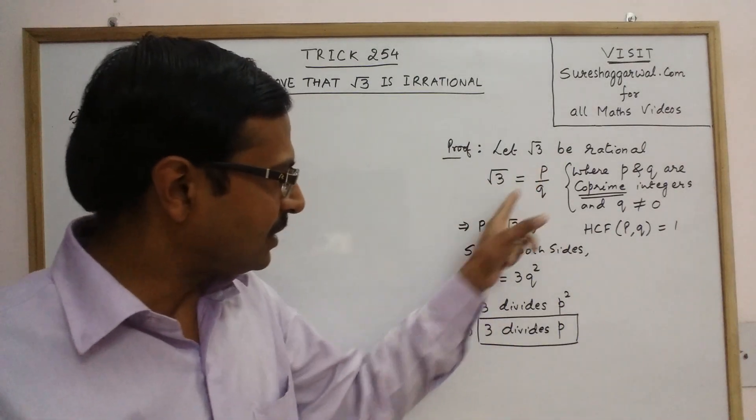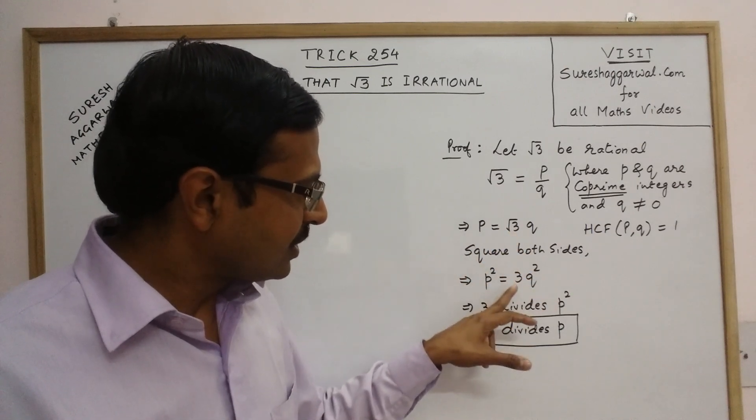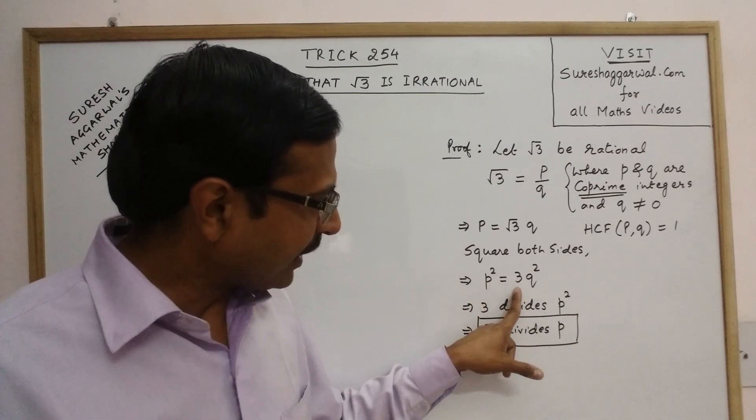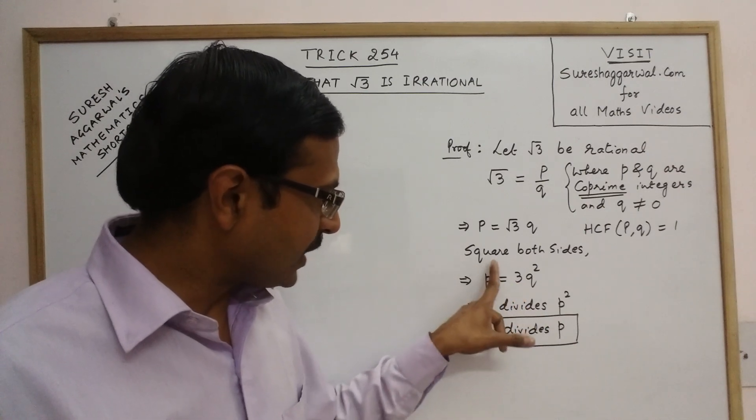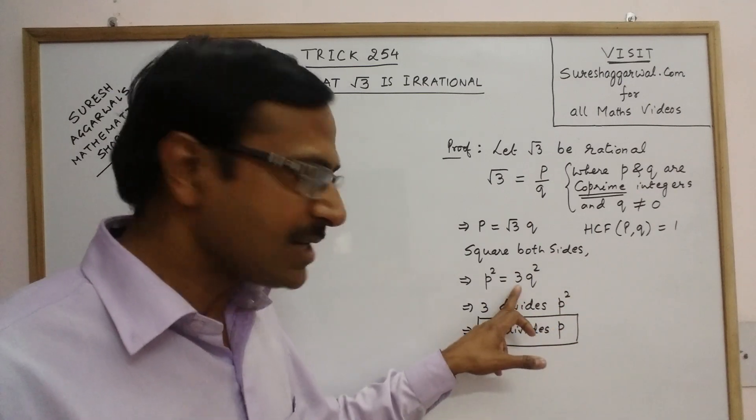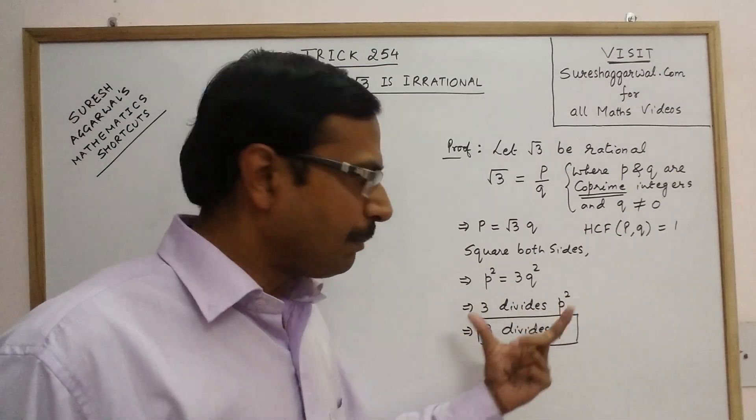Now this is the first part of the theorem. What we have done is we have cross multiplied this and by squaring we have removed this square root sign and then if 3 is a factor of this p square because p square is expressed as 3 into q square. So 3 into anything. So 3 becomes a factor. So 3 divides p square. So 3 divides p.